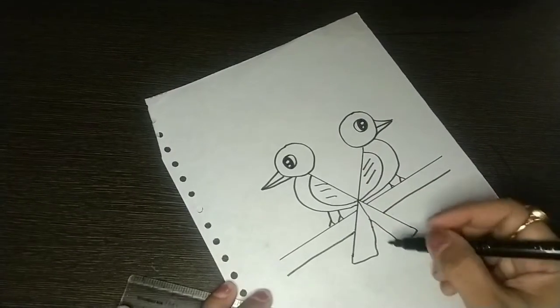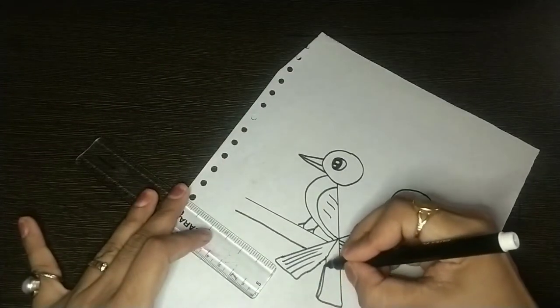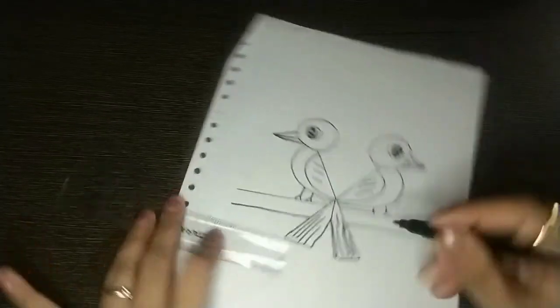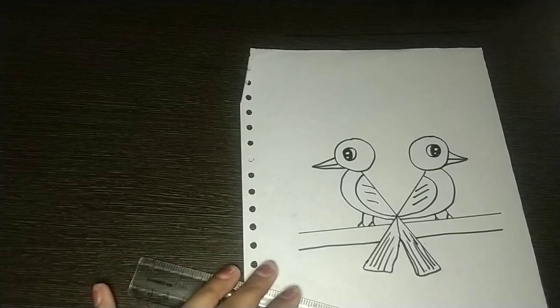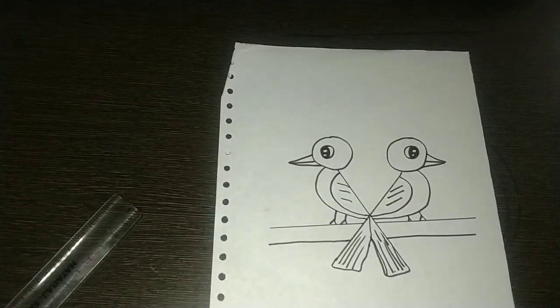Then what we will do, we will draw the tail of the bird like this. The tail is drawn and our sweet little bird is made.